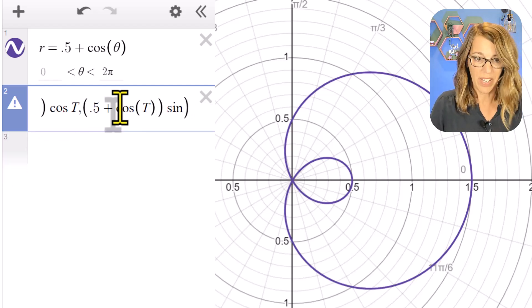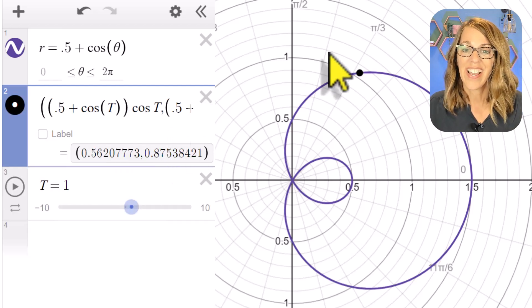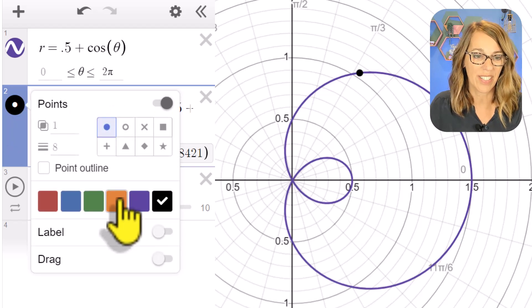I've got one more theta—replace that with a capital T. So yes, I do want to add a slider. And notice how right off the bat, my point lands on the graph. Let's make this point a little easier to see.